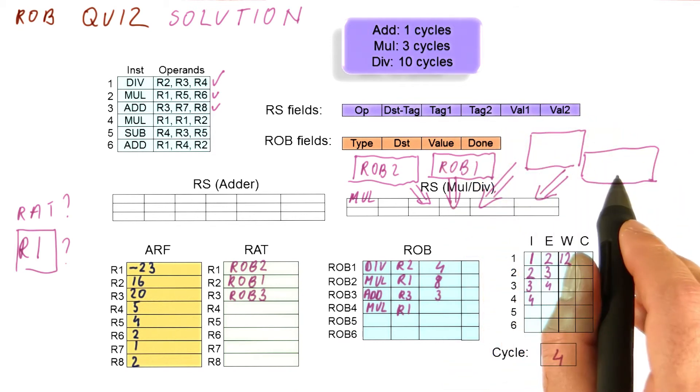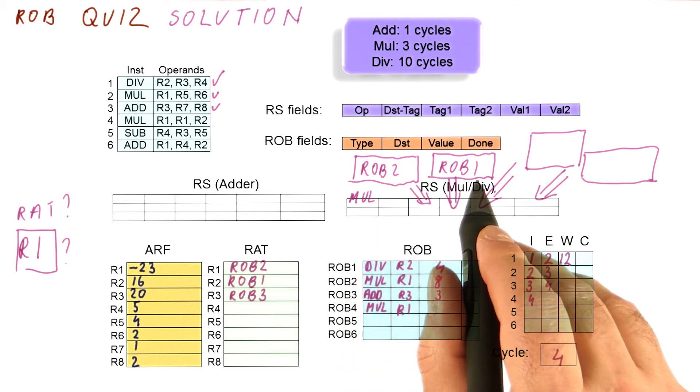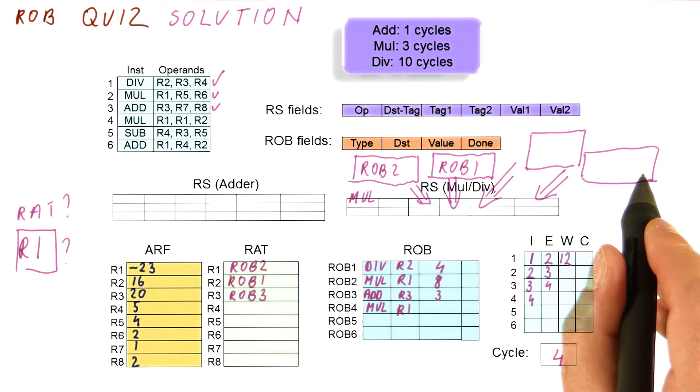We would only put something here if we could actually get the actual value from wherever it is, but because we need to wait for ROB2 to get the value, and we need to wait for ROB1 to get that value, we simply leave this empty.